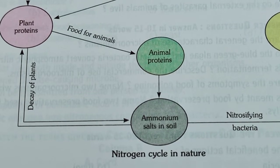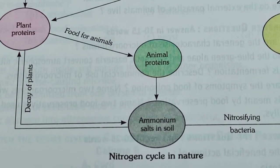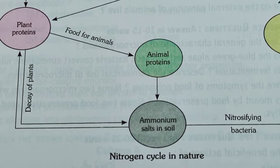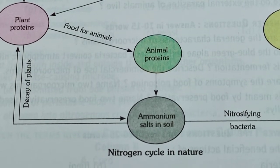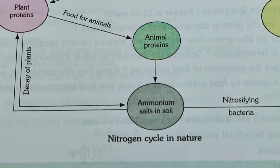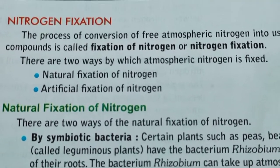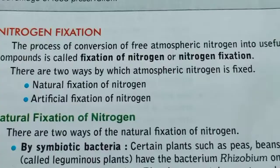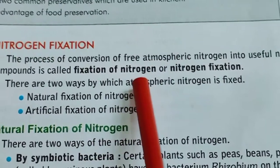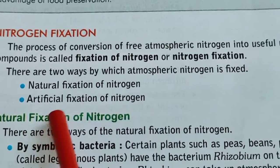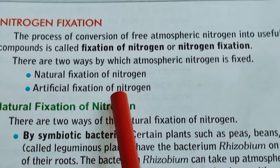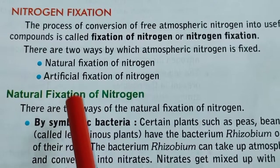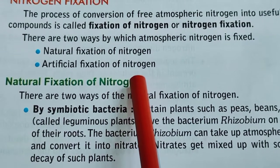In previous classes we read about symbiotic bacteria present in the nodules of the roots of leguminous plants, which can directly convert atmospheric nitrogen into nitrates. The process of conversion of free atmospheric nitrogen into useful nitrogen compounds is called fixation of nitrogen or nitrogen fixation. There are two ways: natural and artificial.